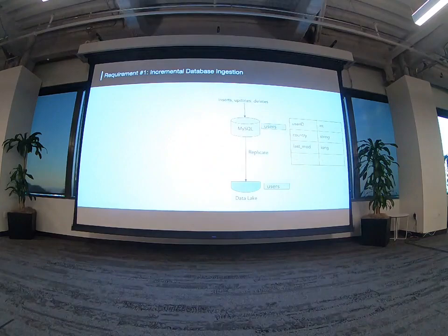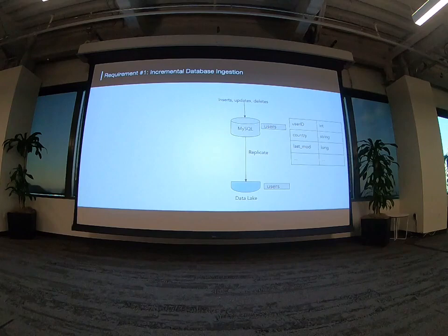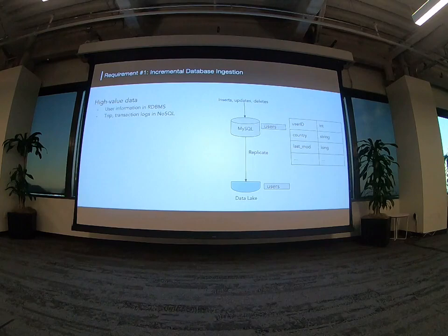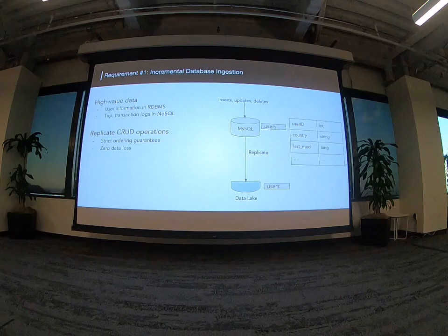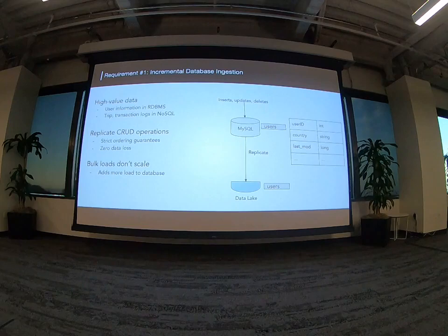Every company has a few very critical, high-value datasets. For Uber, it's trips, session logs, and user information typically stored in MySQL. As users perform operations against them, you need to replicate them to your data lake with strict ordering guarantees and zero data loss. Another thing is that people still do bulk loads of databases because it's easy, but they don't scale and create a lot of inefficiencies. You need to figure out a way to implement incremental ingestion of your databases.